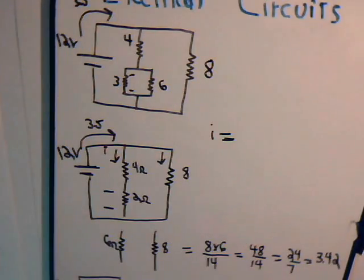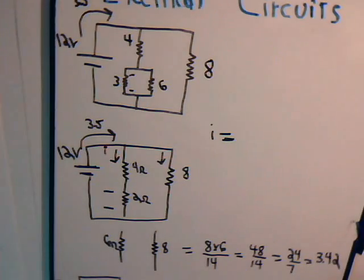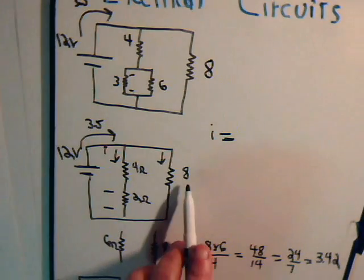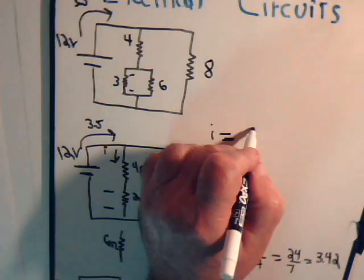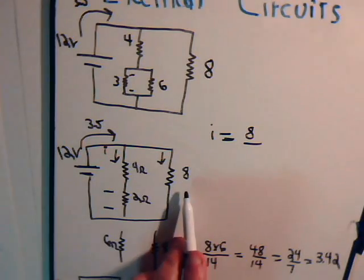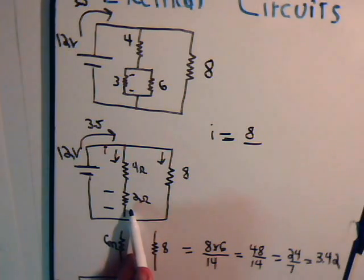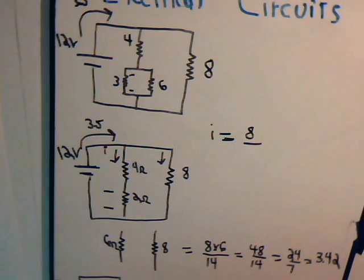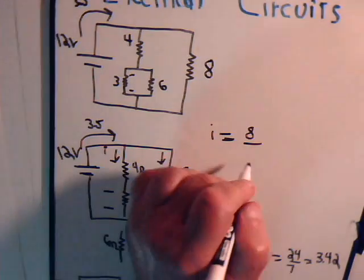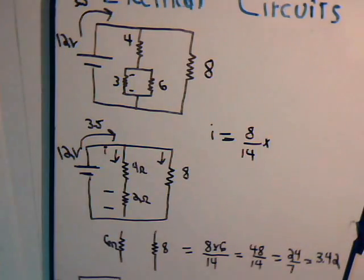And the current that goes to, you can think of this as one resistor with a value of 6 ohms. The current that goes into this resistor is equal to the value of this resistor divided by the sum of these two, which is 8 and this is 8 and this is 6, add them together and we get 14.